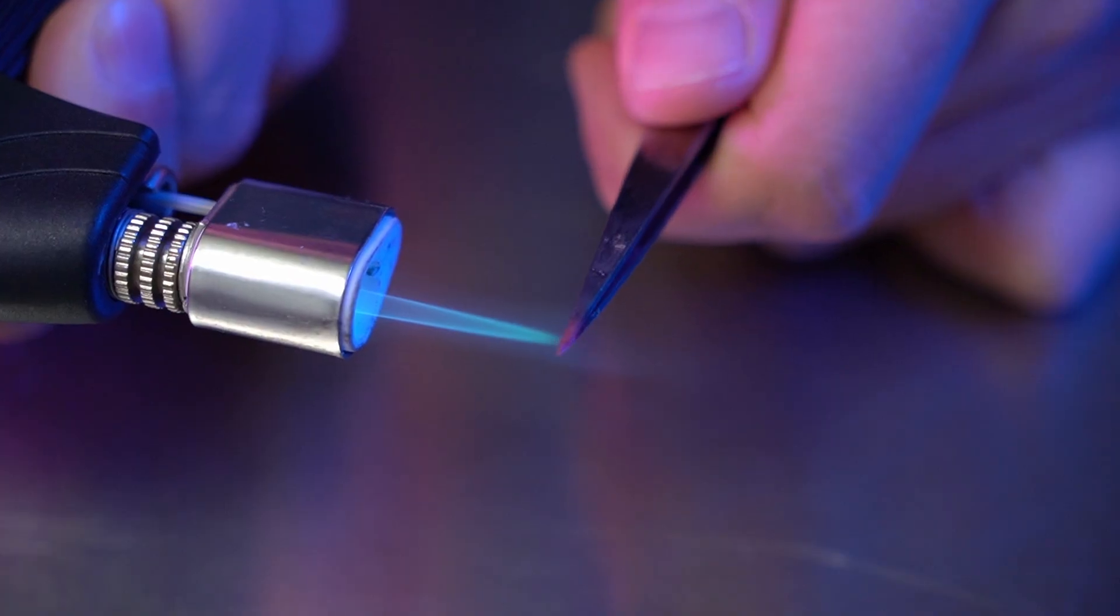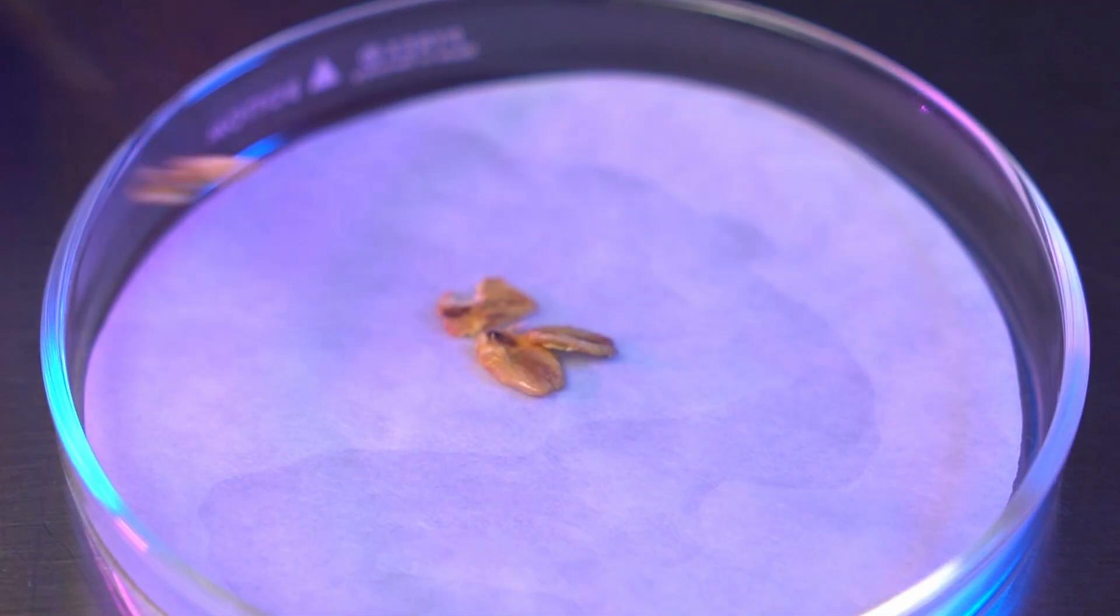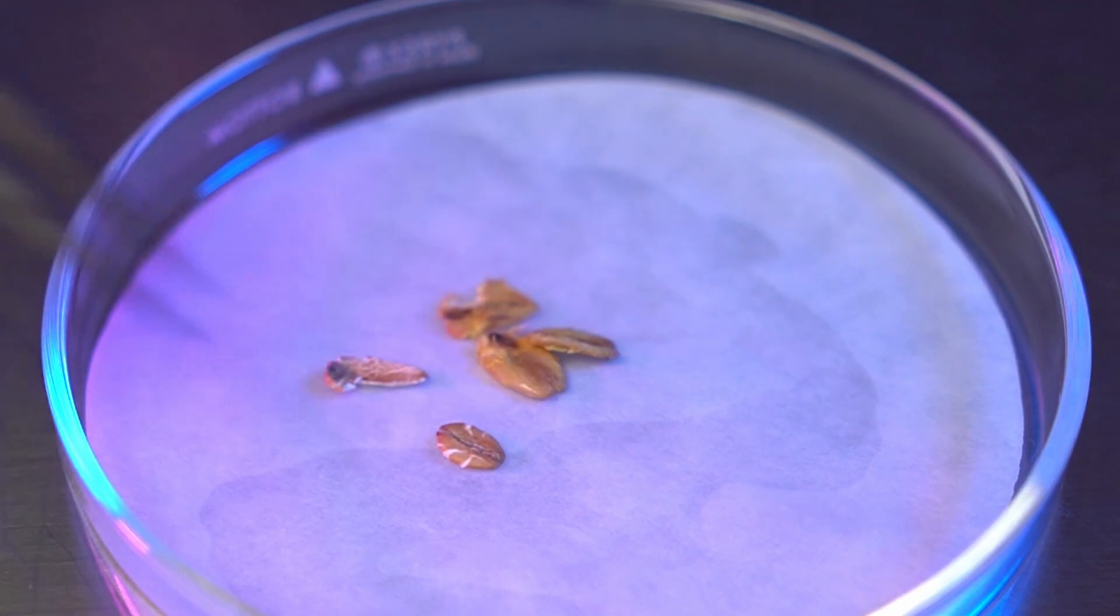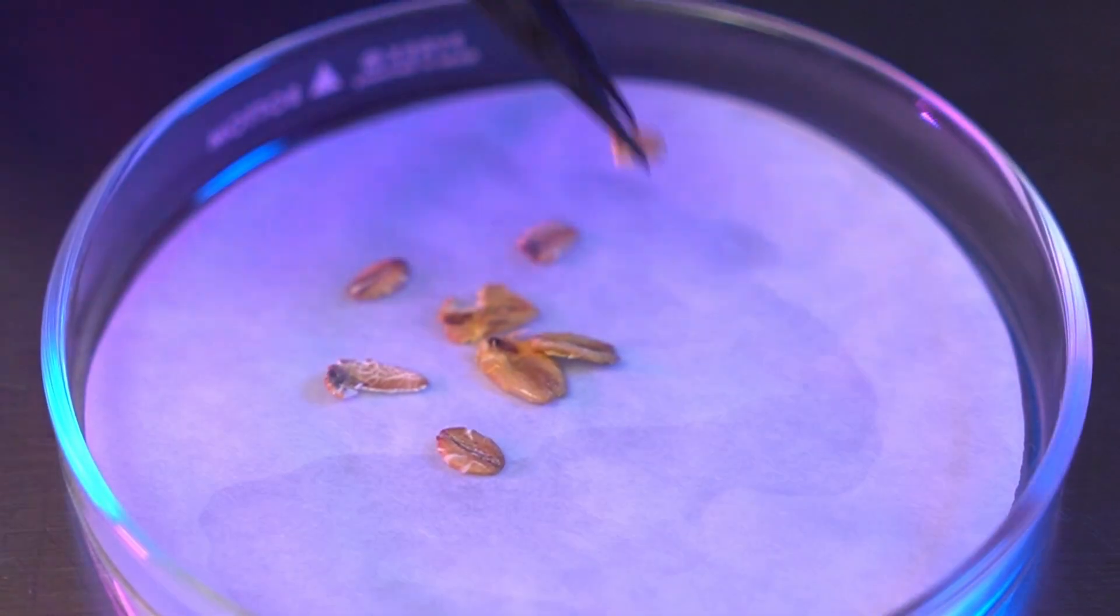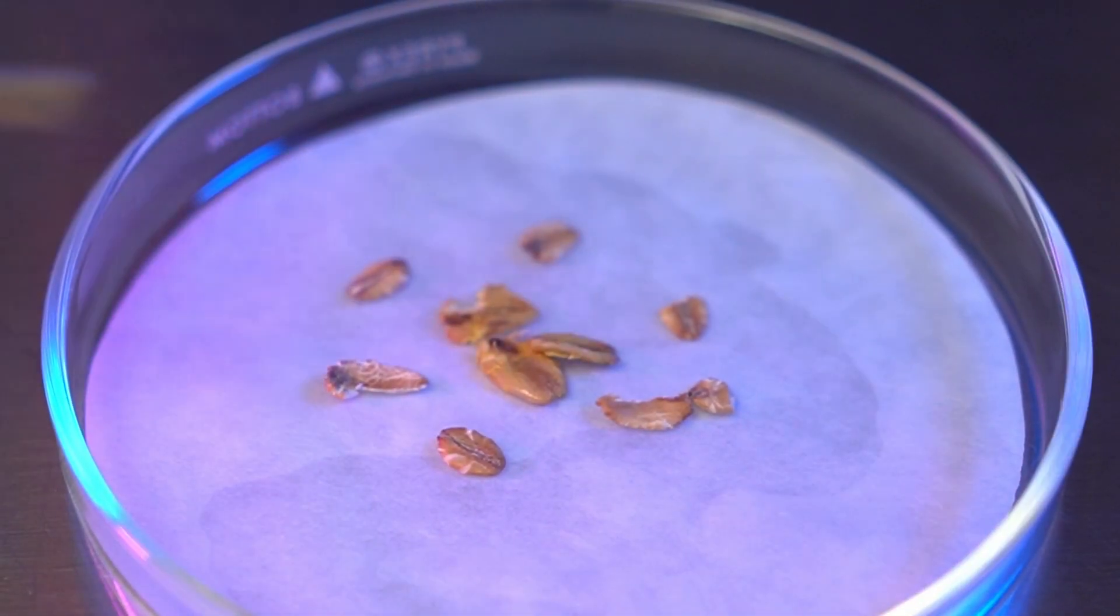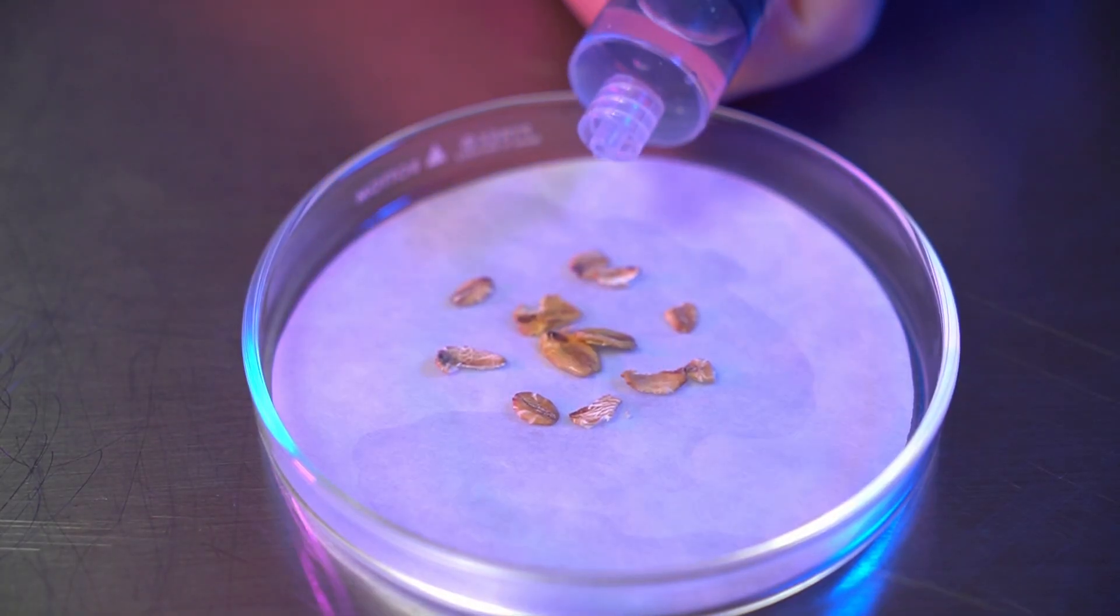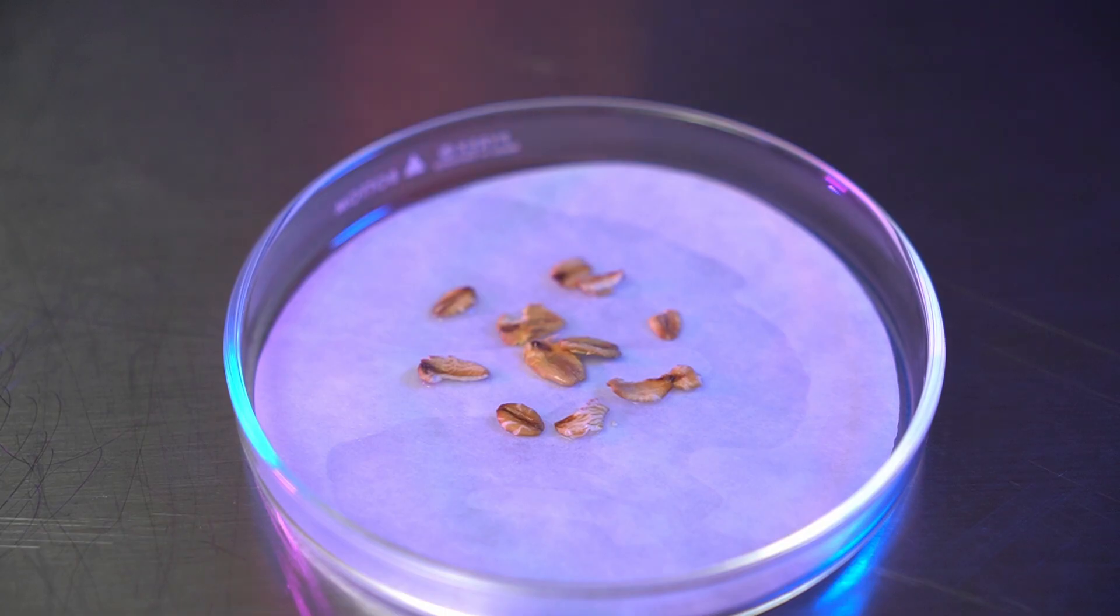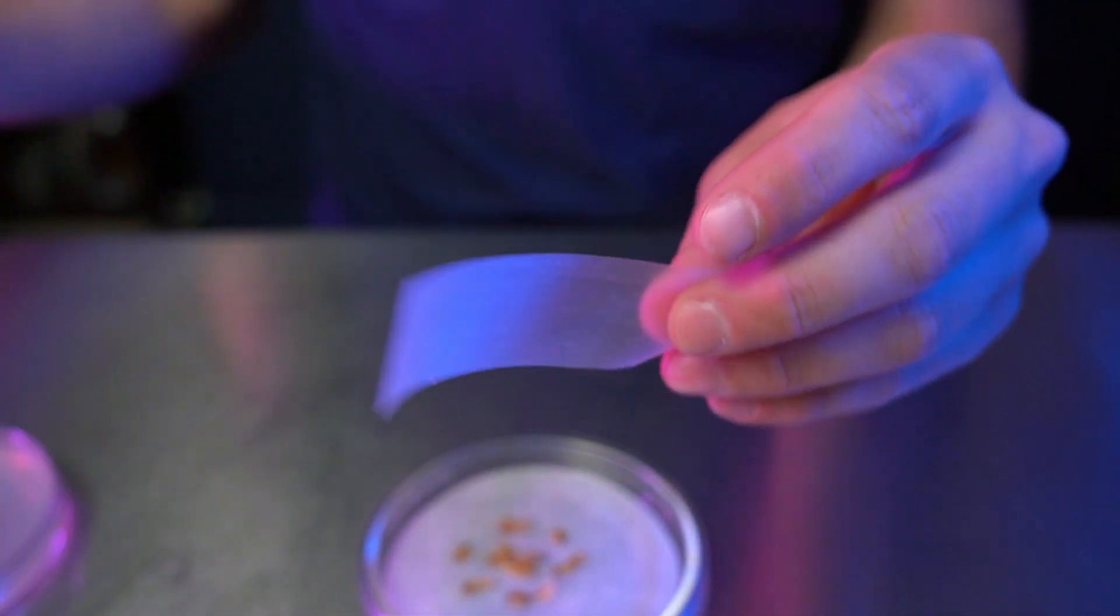After wiping and sterilizing our tweezers again, we can transfer some fresh food onto the plate as well and hydrate it with our syringe. Wrap the plate as mentioned before.